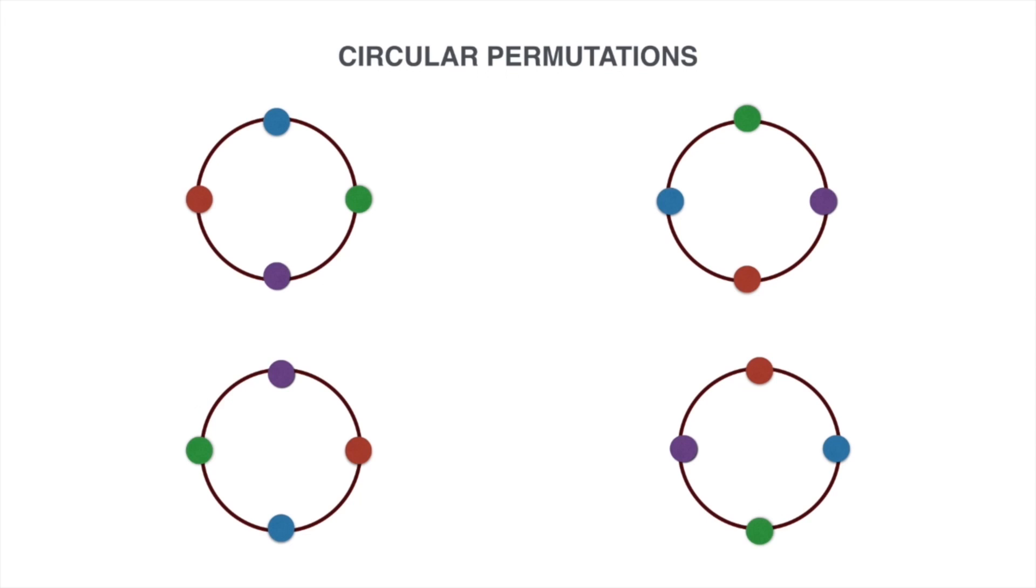Now, let us look at four different versions of this figure. It might seem at the first glance that these four figures represent four different permutations, but actually these represent only one permutation.